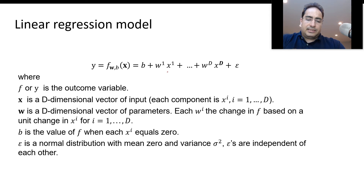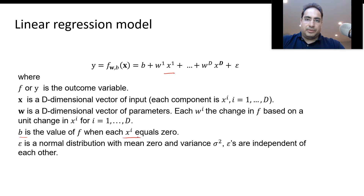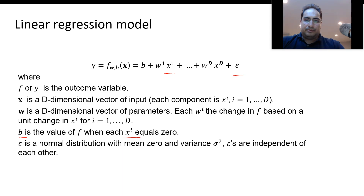Each x_i is one feature, and b is the value of f when all x_i are equal to zero. We also have an epsilon, which represents some error that follows a normal distribution with mean zero and variance sigma squared, and it is independent for each of our cases.